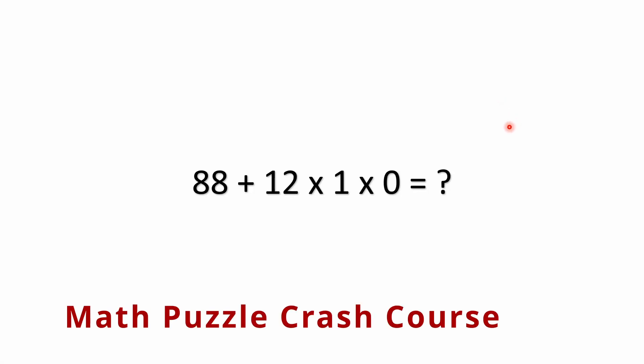Hello everyone and welcome back to the Math Puzzle Crash Course. We have a multiple operations problem here which features addition and multiplication all in one equation, and that is 88 plus 12 times 1 times 0 equals what?